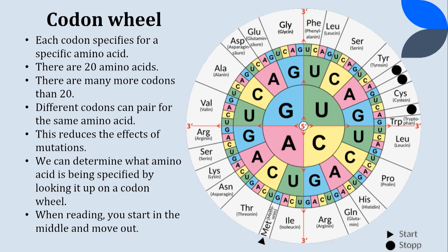What I really need to talk about today is this thing called a codon wheel. Codons code for amino acids, and we need to know what codons are coding for which amino acids. We can use a codon wheel to figure out what amino acids we need — each codon specifies a specific amino acid. There are only 20 amino acids but a lot more codons than 20. Different codons can code for the same amino acid, which reduces the effects of mutations. We can determine the amino acid by looking it up on the codon wheel, and you always start in the middle and move out.